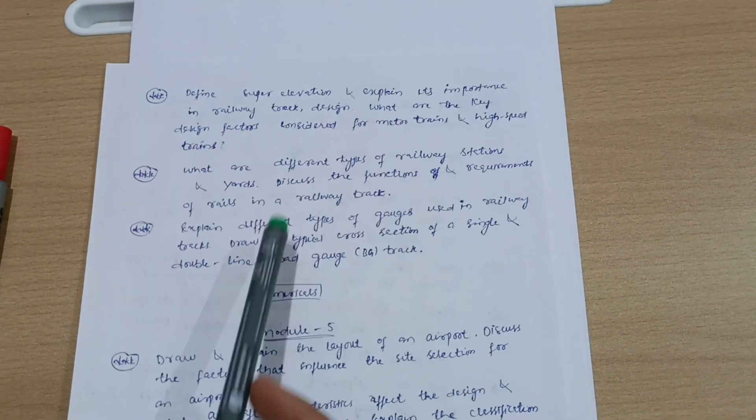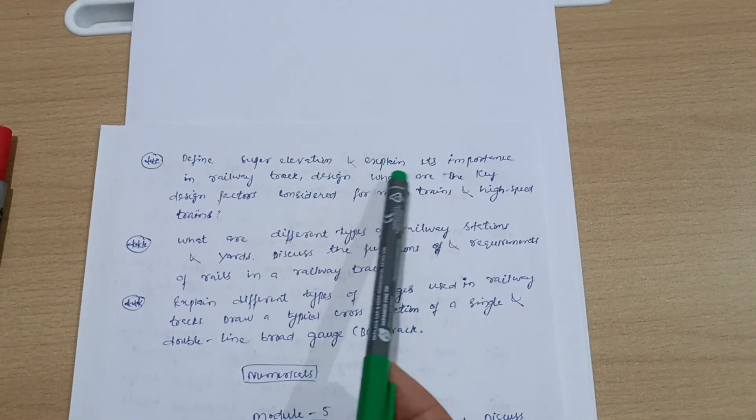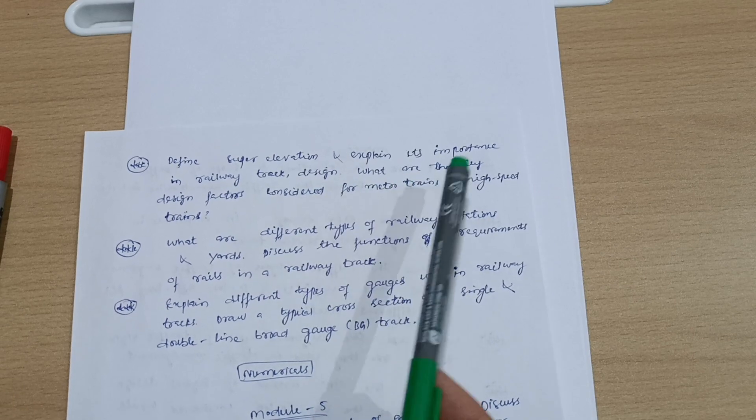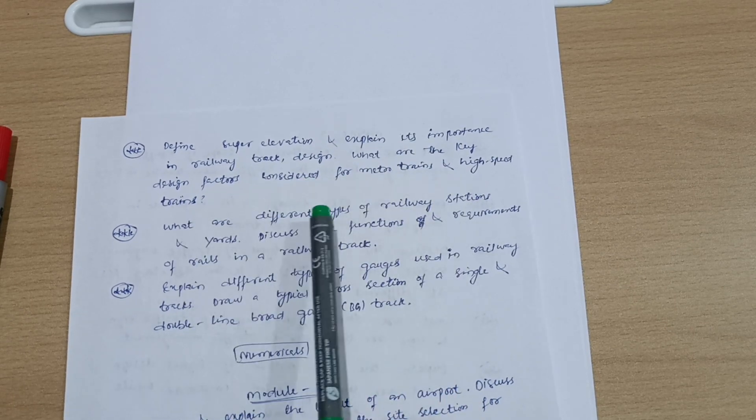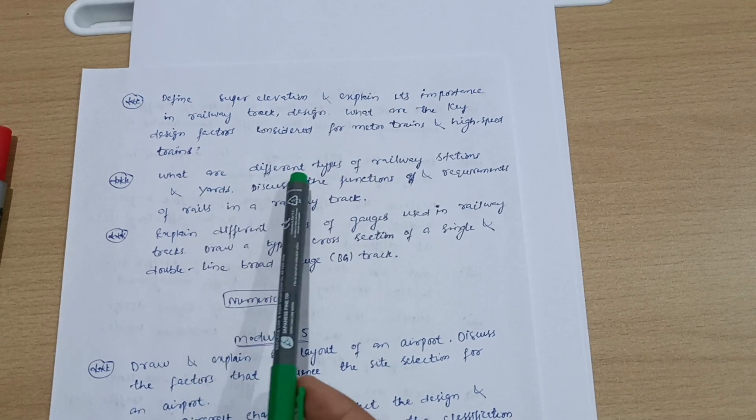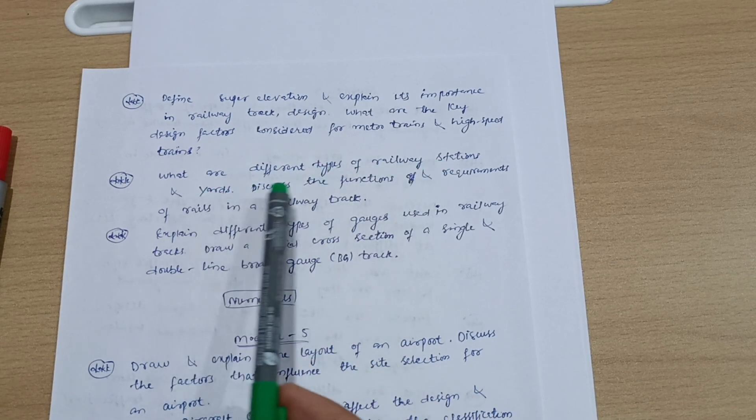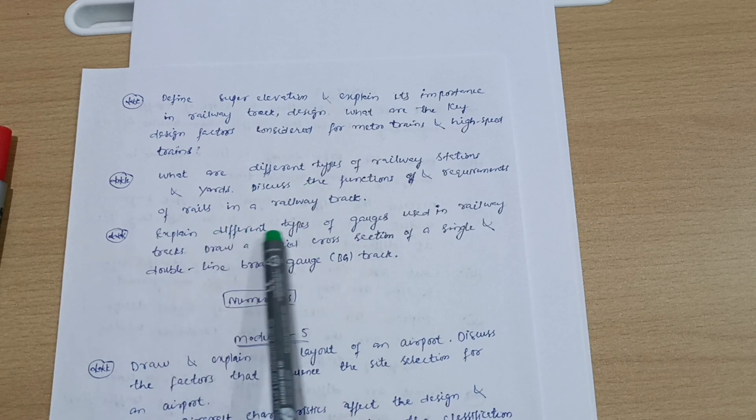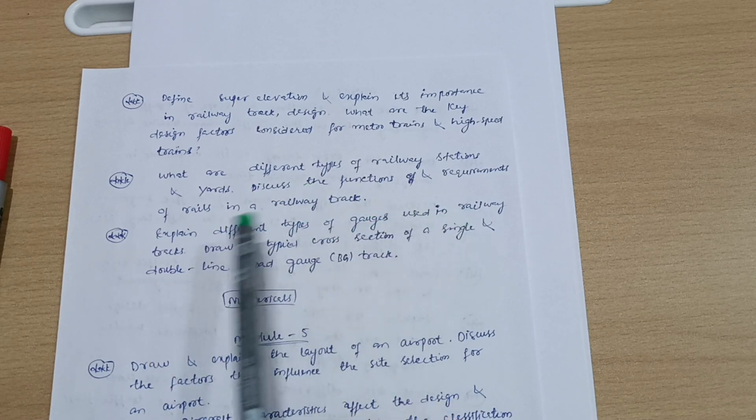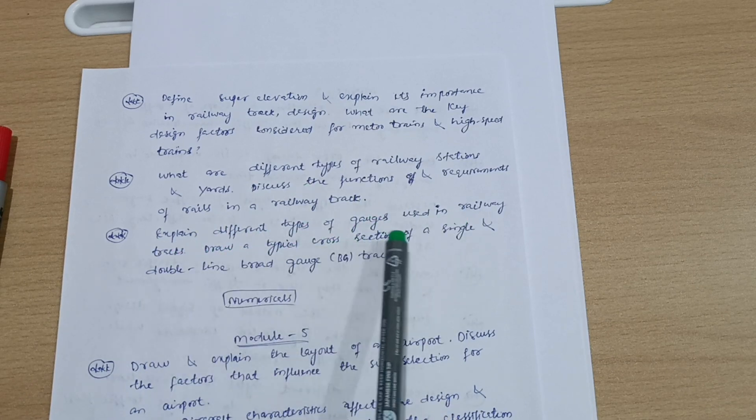Next, three questions from module four are here. Define super elevation and explain its importance in railway track design. What are the key design factors considered for metro trends and high-speed trends? What are different types of railway stations and yards? Discuss the functions and requirements of rails in a railway track. Explain different types of gauges used in railway tracks. Draw a typical cross section of a single and double line broad gauge BG track.